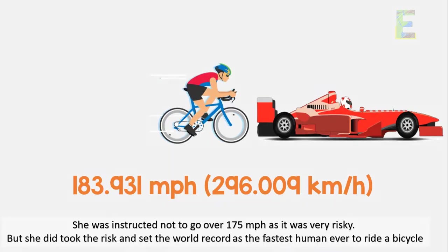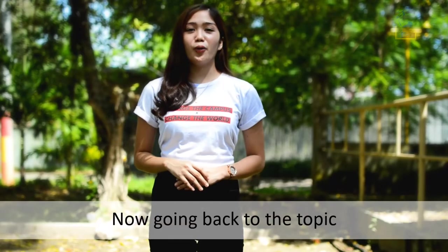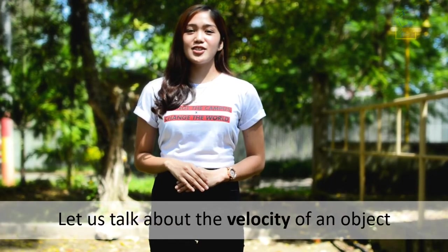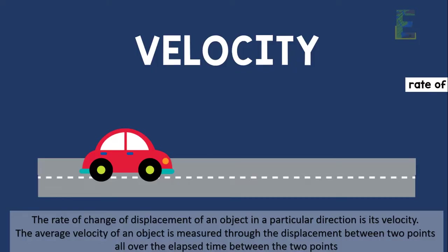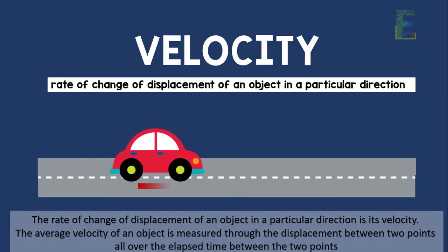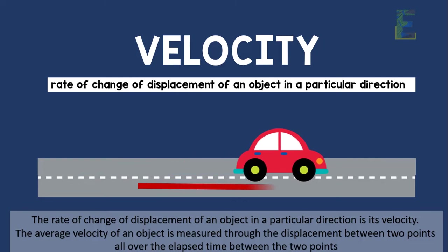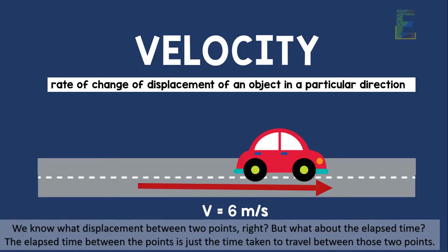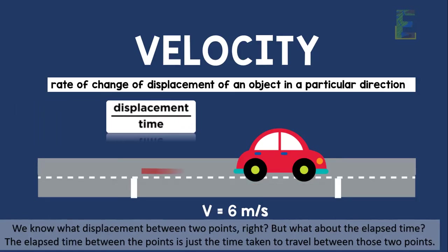Alright! Now going back to the topic, let us talk about the velocity of an object. The rate of change of displacement of an object in a particular direction is its velocity. The average velocity of an object is measured through the displacement between two points all over the elapsed time between the two points. We know what displacement between two points, right? But what about the elapsed time?